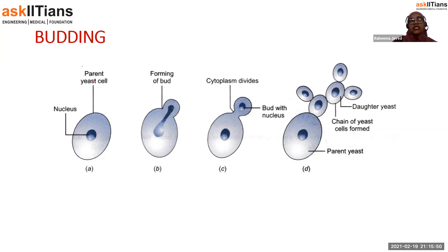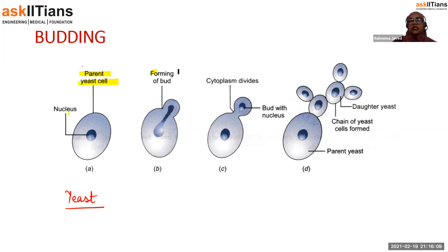Here budding in yeast is shown. Yeast is a unicellular fungus. You can see this is the parent yeast cell. It is forming a bud. The cytoplasm starts dividing along with the nucleus, and then it has separated as a separate cell.